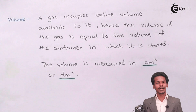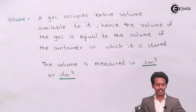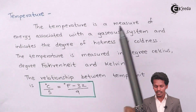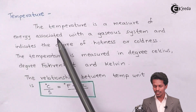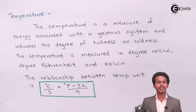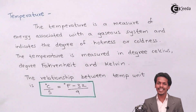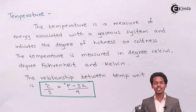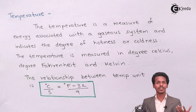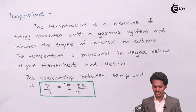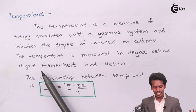Now moving on to the next property, temperature. Temperature is a measure of energy associated with a gaseous system and indicates the degree of hotness or coldness. By measuring temperature we can predict whether something is hot or cold, and the energy associated with it — more energy means hotter, less energy means cooler. Temperature is measured in degree Celsius, degree Fahrenheit, and Kelvin.